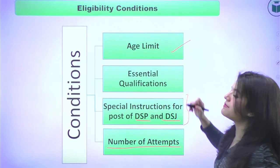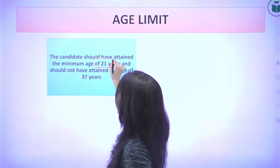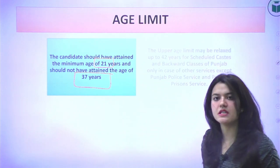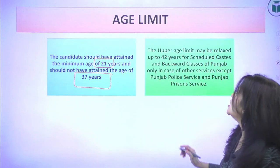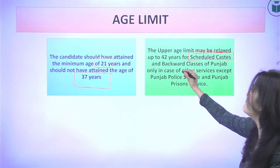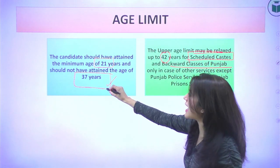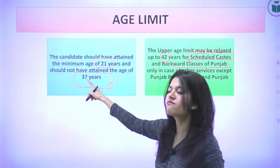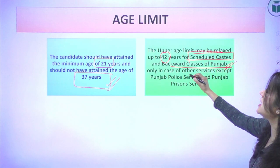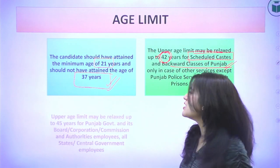Let's start with the age limit. Your minimum age must be 21 years and maximum age must be 37 years for general candidates. If you belong to scheduled castes or backward classes of Punjab, the upper age limit is relaxed to 42 years.